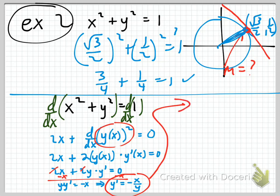So we know y prime equals negative x over y, and we want y prime when x equals radical 3 over 2.